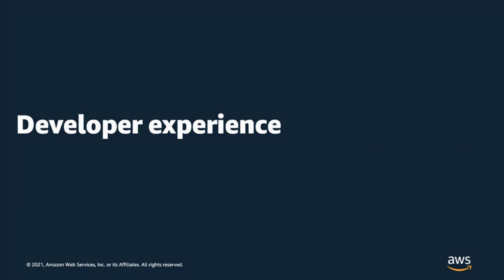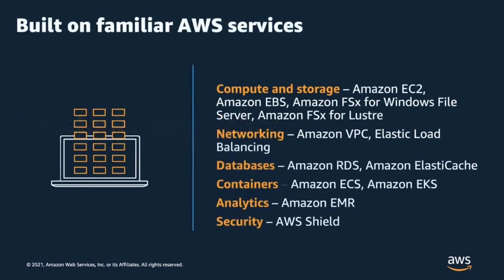Now that we've reviewed use cases for Local Zones, let's dive into the developer experience. We locally support select services in AWS Local Zones. We launched our first Local Zone in LA with support for Nitro-based Amazon EC2 instances, EBS Volumes, Amazon VPC, Amazon Application Load Balancer, Amazon FSx for Windows and Lustre, and Amazon Direct Connect. Since launch, we've added support for Amazon RDS, EMR, ElastiCache, ECS, and EKS, and are further adding more services based on your feedback.